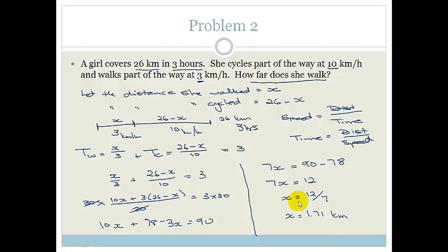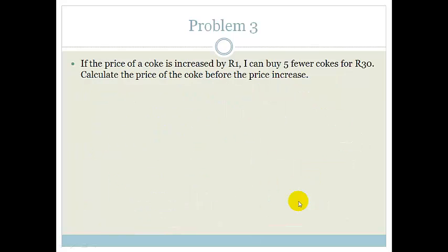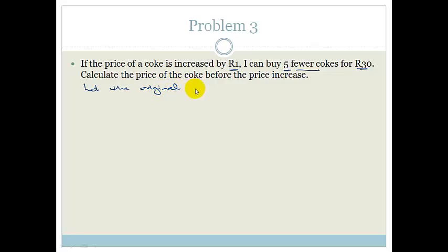Let's look at another problem. If the price of Coke is increased by 1 Rand, I can buy 5 fewer Cokes for 30 Rand. Calculate the price of Coke before the price increase. Obviously, we want to let the original Coke price equal X. I want to show you a new tool — we can use a table — and then you can decide which method you prefer.